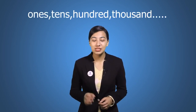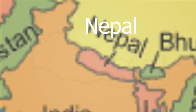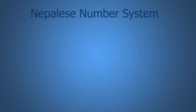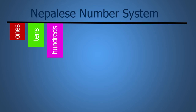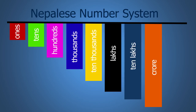So the number places are simply ones, tens, hundreds, thousands, and so on. But what about the rest of the world — do they use the same number places as we do here in Nepal? Well, they do and they don't. The Nepal system uses places like ones, tens, hundreds, thousands, ten thousands, lakhs, ten lakhs, crore, ten crore, and so on.